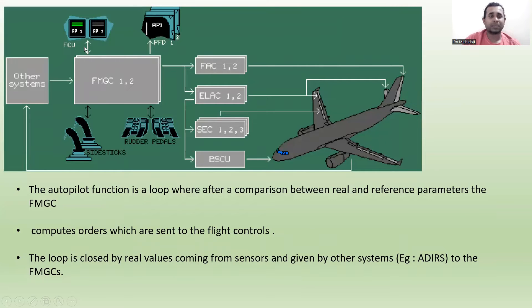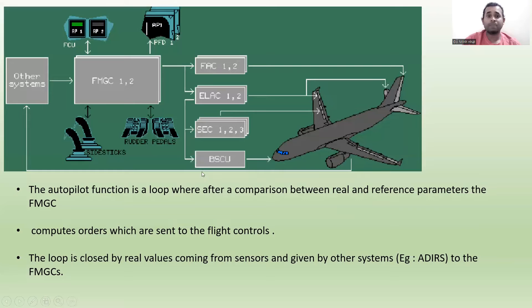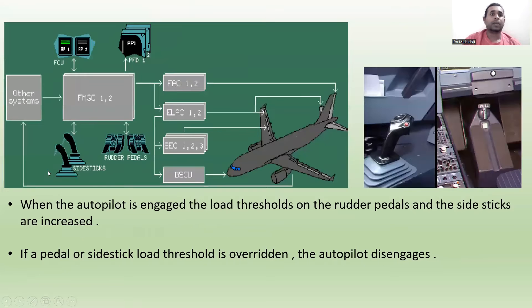You can see that information comes to the Flight Management Guidance Computer one and two, then it is delivered to the Flight Augmentation Computer, which goes to the rudder controls, and to the ELAC for elevator and aileron controls, to the SEC for spoiler and elevator controls, and to the BSCU Brake Steering Control Unit. Feedback from other systems also returns to the Flight Management Guidance Computers.